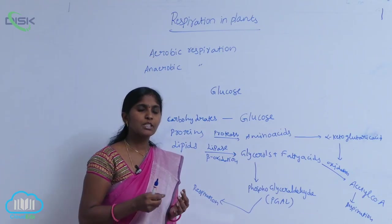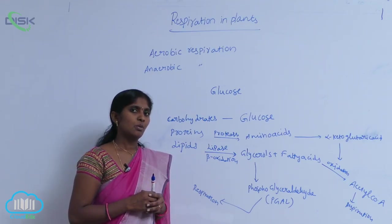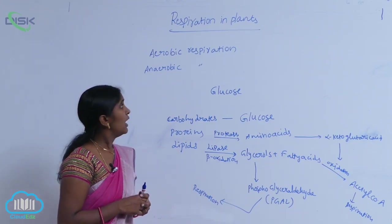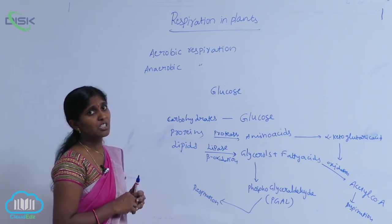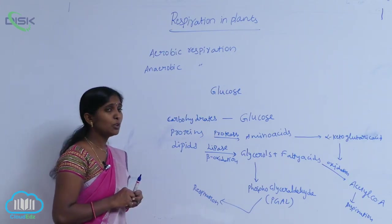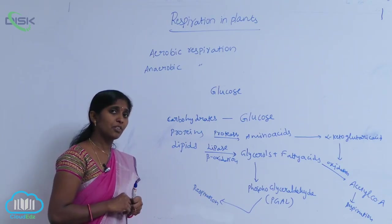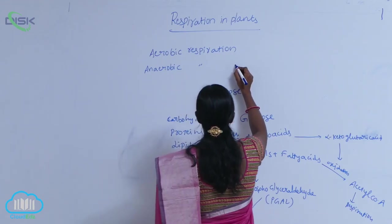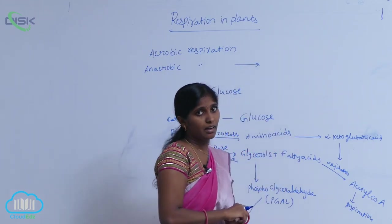In cellular respiration, the process is of two types: aerobic respiration and anaerobic respiration. Aerobic respiration means in the availability of oxygen, the respiration is carried out. In anaerobic respiration, after the formation of intermediate compounds, in the absence of oxygen, it turns into ethyl alcohol — for example, in prokaryotic cells where oxygen is unavailable.